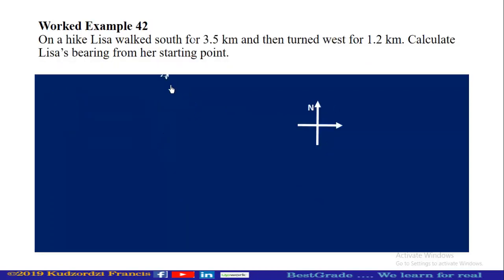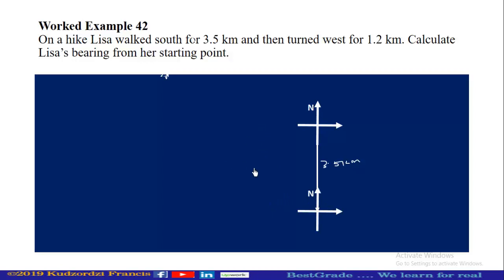On a hike, Lisa walked 3.5 kilometers south — so she walks out 3.5 kilometers in the south direction, and we are now here. Then she turned west for 1.2 kilometers, moving 1.2 kilometers west. Now we are at this position.